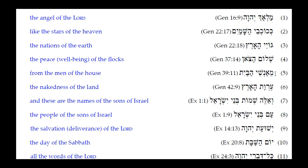Number five: MeAnshei HaBayit. The preposition Men is attached to a masculine plural construct noun — Anshei — remembering that it comes from Anashim and ultimately from Ish for 'man.' HaBayit is the absolute noun. Translation: 'from the men of the house.' Number six: Ervat HaArts. The Patak Tav tells you it is a feminine singular construct noun in relationship to HaArts. Translation: 'the nakedness of the land.'